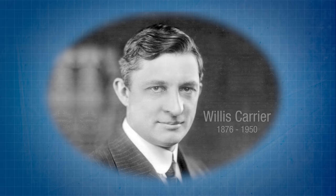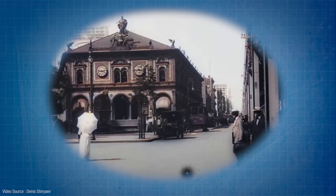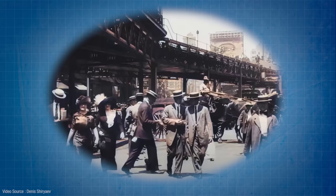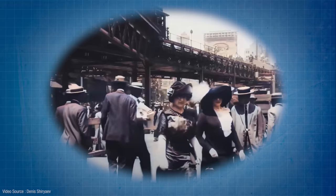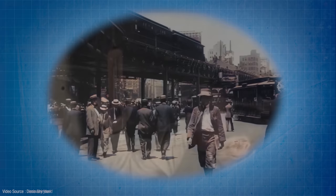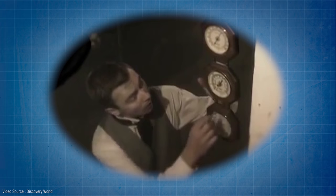Two consecutive New York summers of extreme heat and humidity had caused swelling pages and blurry prints that were threatening the reputation of a high-quality printing business in Brooklyn called Sackett-Wilhelms Lithographic and Publishing Company. Carrier was dispatched by his employer to see if he could solve the problem, and what he came up with was a contraption that used an industrial fan to blow air over metal coils filled with cold water, forcing the excess moisture in the air to condense onto the surface of the cold coils.